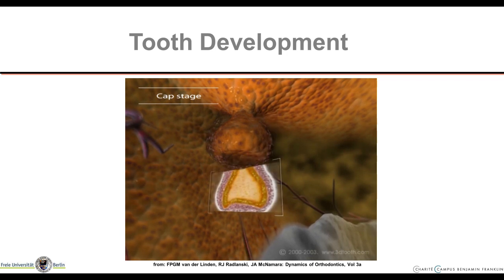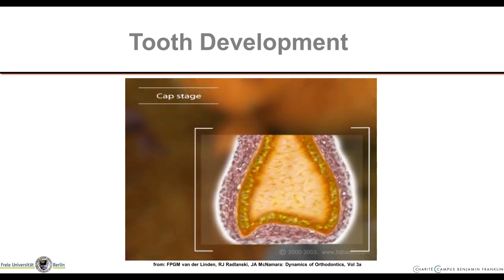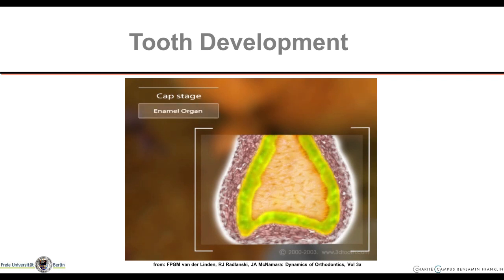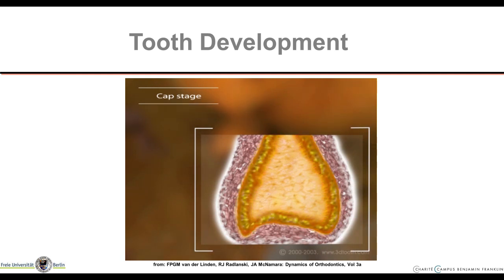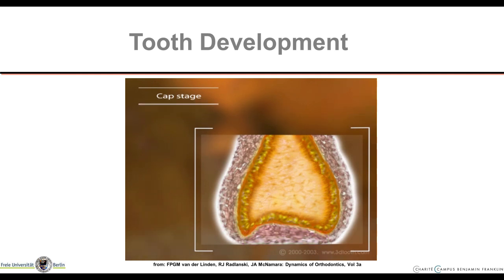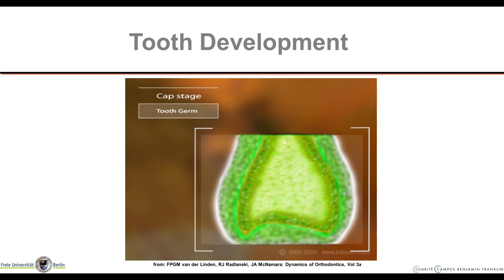At this stage of development, we can already identify all the different tissues that will make up the tooth. The epithelial cells form the enamel organ and will later form dental enamel. The compacted mesenchyme will give rise to dentin and to the pulp, and at that time it is called the dental papilla. All around everything there is the dental follicle, consisting of compacted mesenchyme. Altogether this is called the tooth germ. We have seen the bud stage and cap stage, and next comes the bell stage.